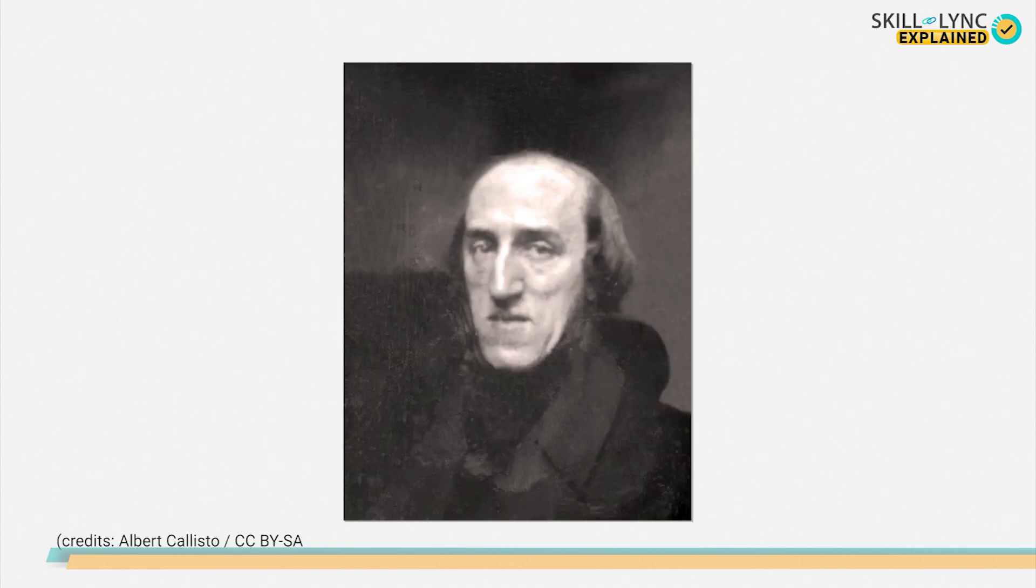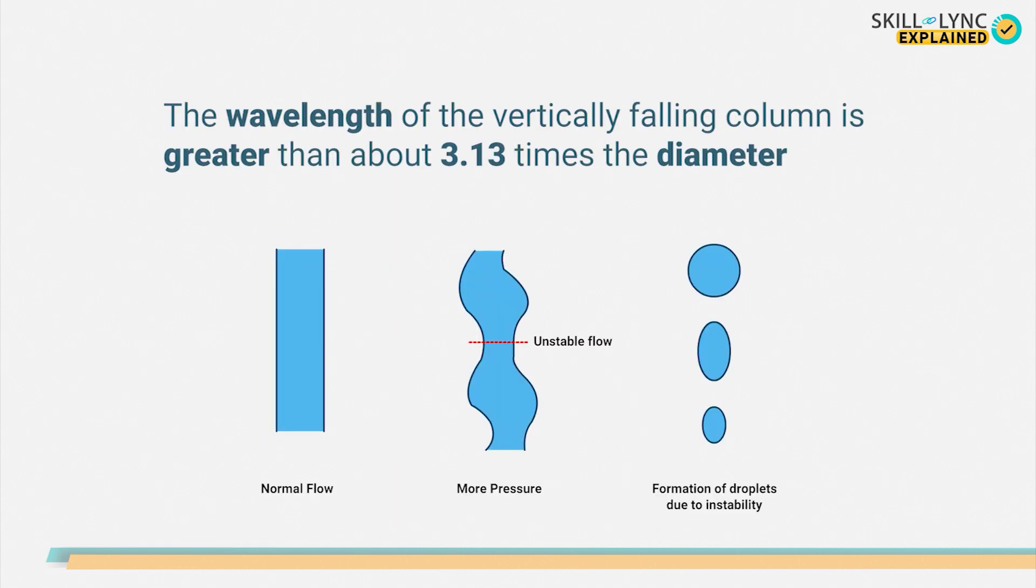Joseph Plateau, in 1873, experimentally found that the stream breaks up into droplets if the wavelength of this vertically falling column is greater than about 3.13 times the diameter.